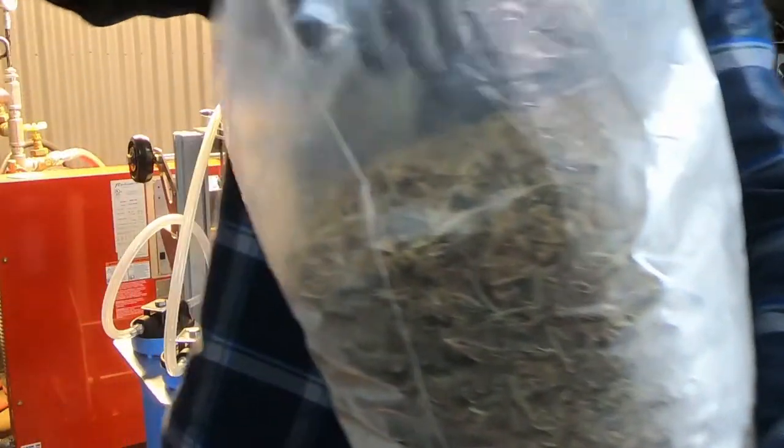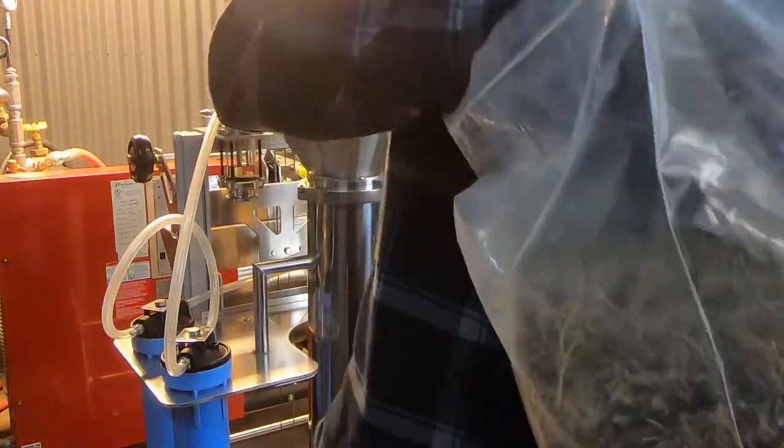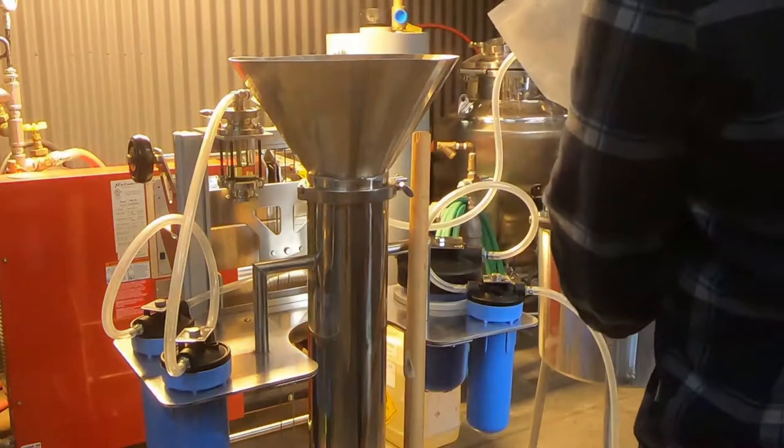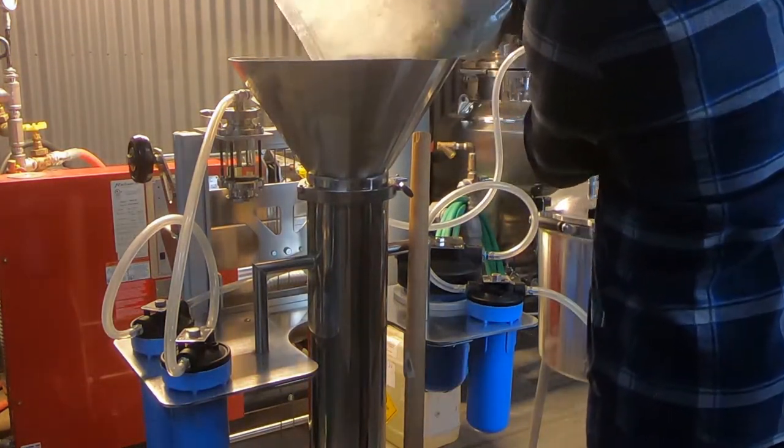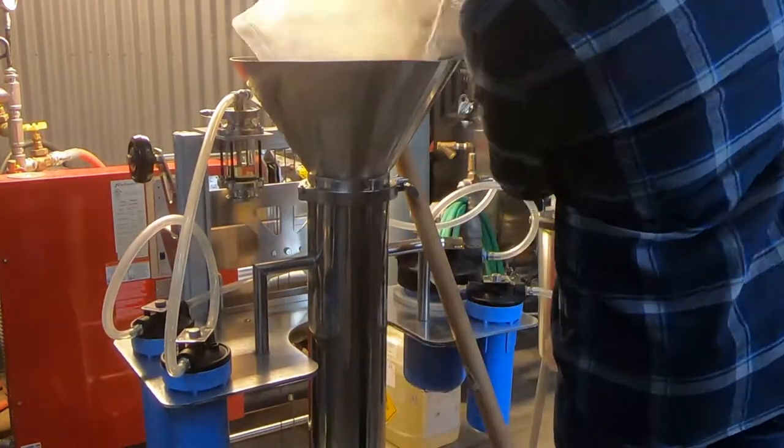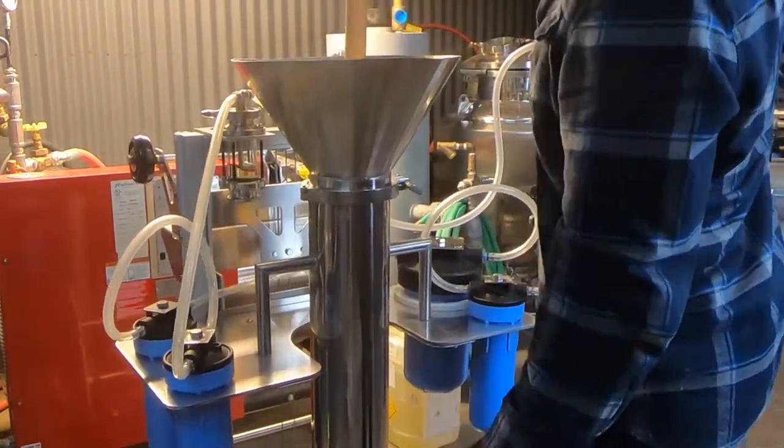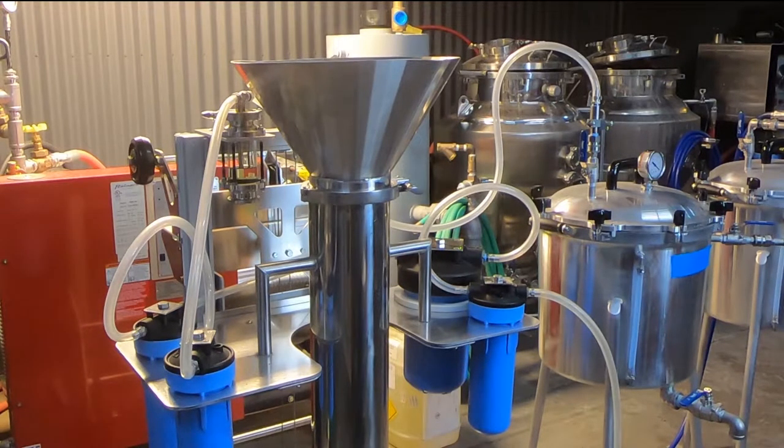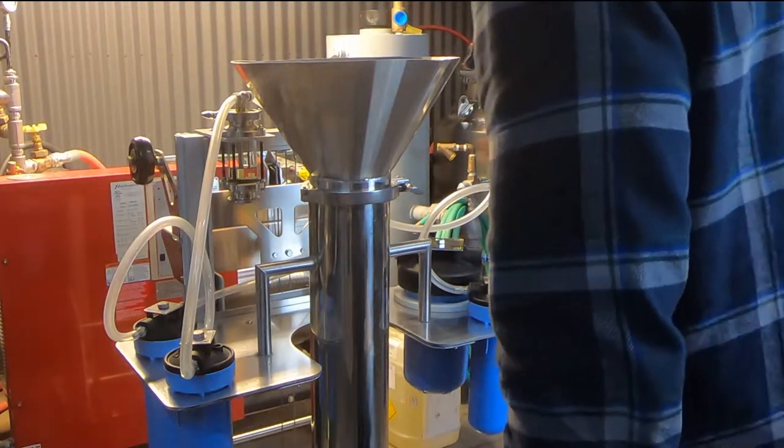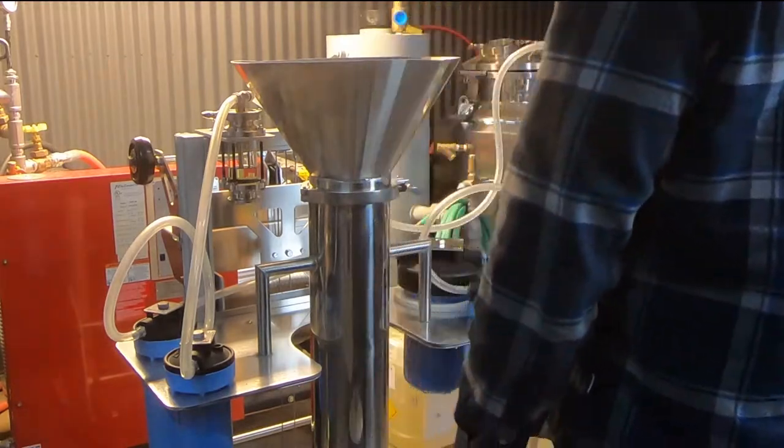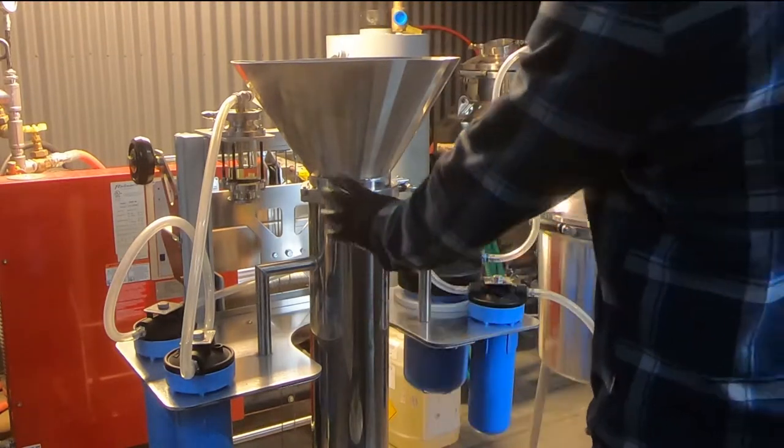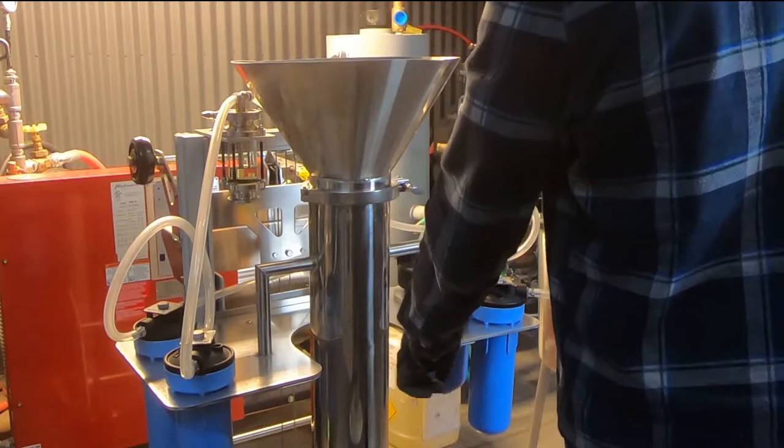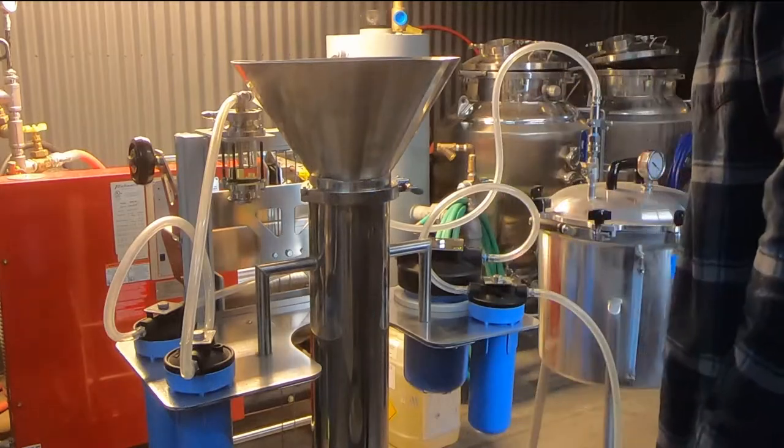I've got five pounds of material here. Now that we got our column packed, we're going to turn our pump on and we're going to pull the liquid nitrogen through the column to winterize the material. Then we'll get our alcohol and we'll do that as well.